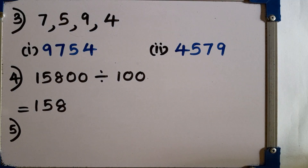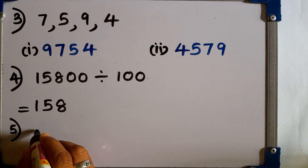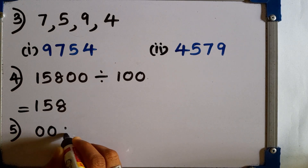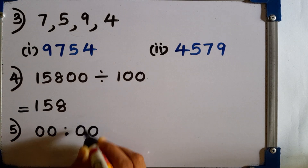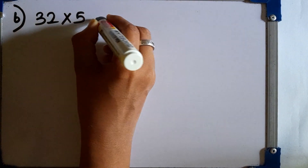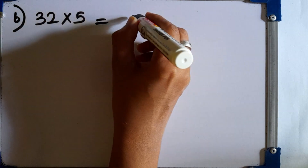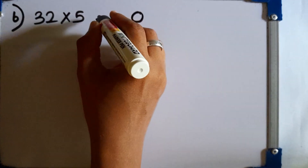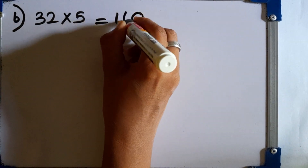Question number 5: write the time 12 midnight according to the 24-hour clock. We can write 12 midnight as 0 hours, 0 minutes. Question number 6: in a hall, there are 32 chairs in a row. How many chairs are there in 5 such rows? 32 multiplied by 5. 5 times 2 is 10, carry 1. 5 times 3 is 15, plus 1 is 16. The answer is 160.